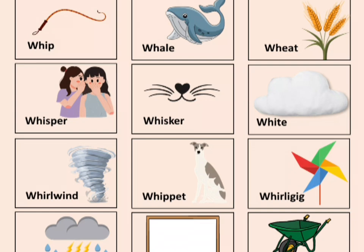There are a few more words: whip, whale, wheat, whisper, whistle, white, whirlwind, whippet, and wigwig.